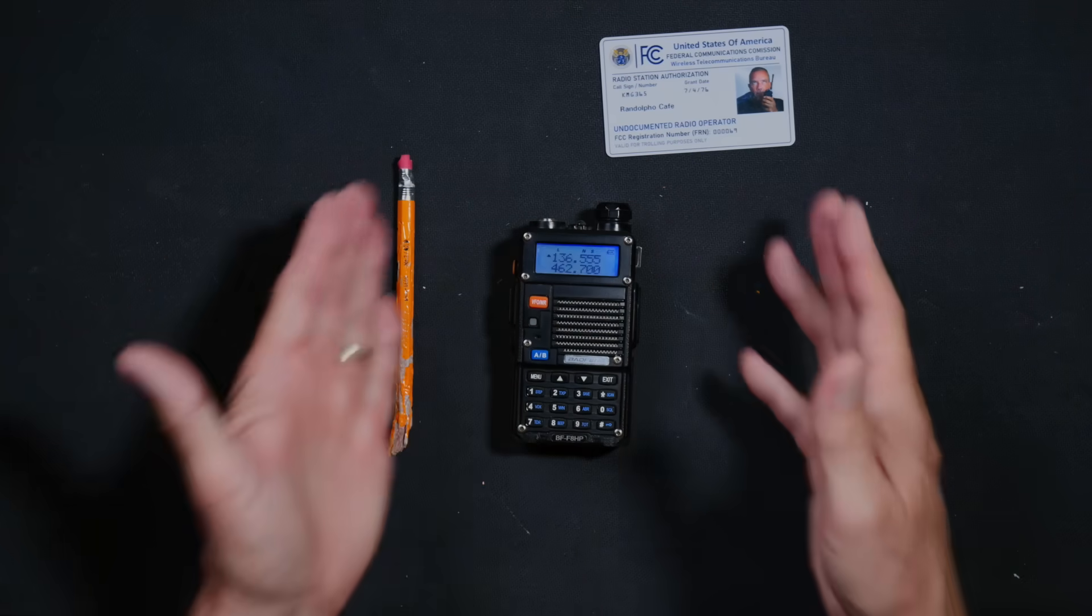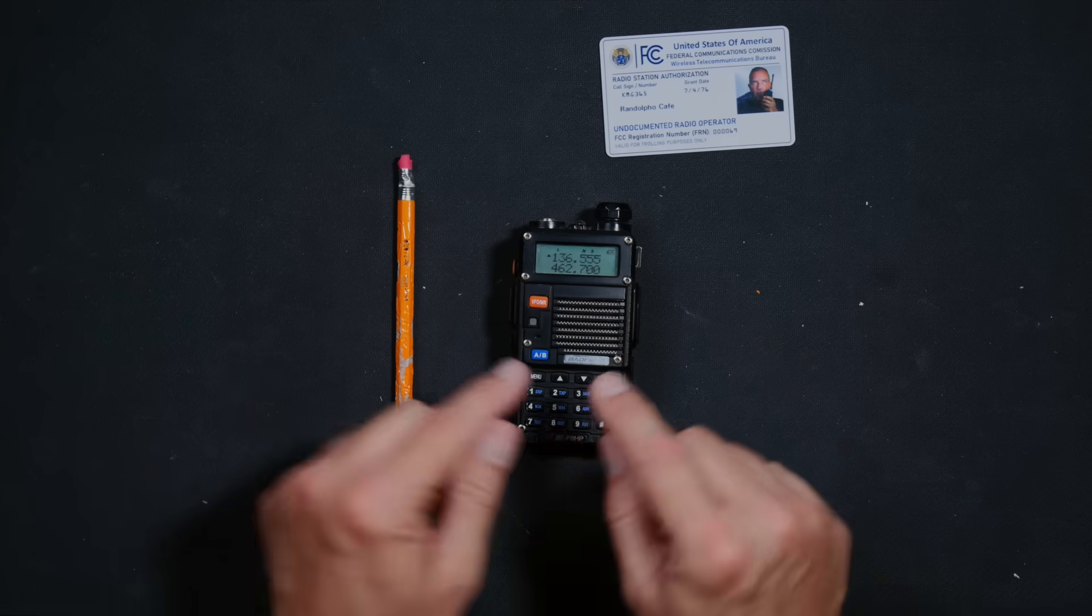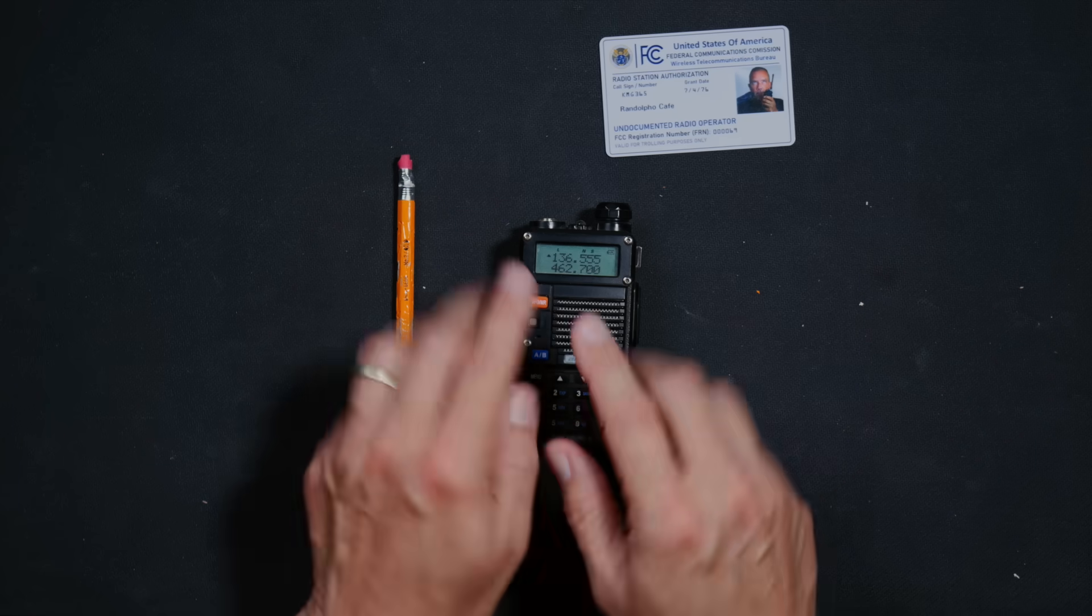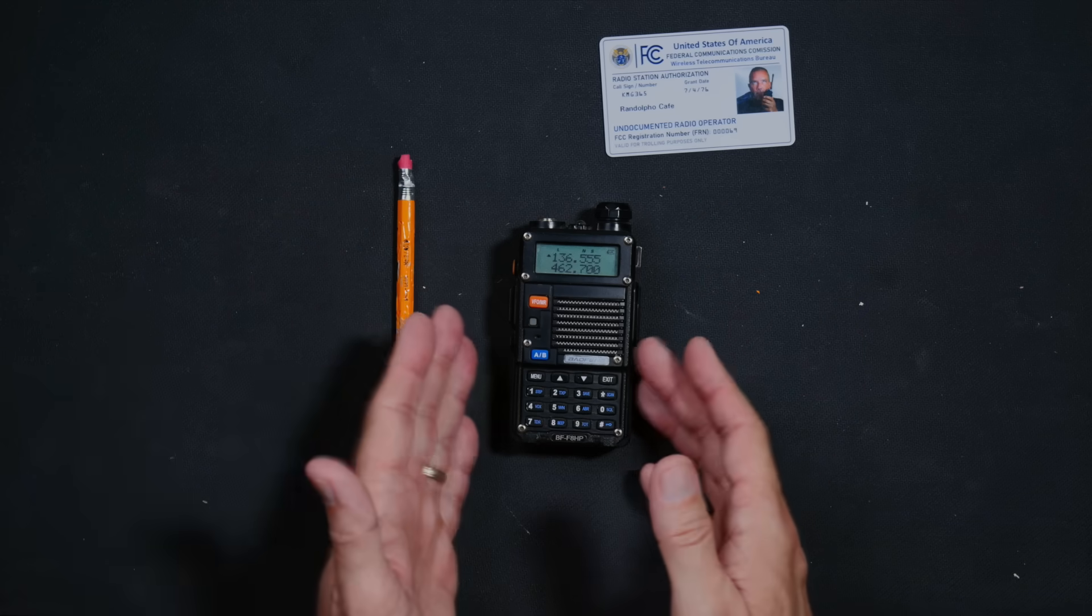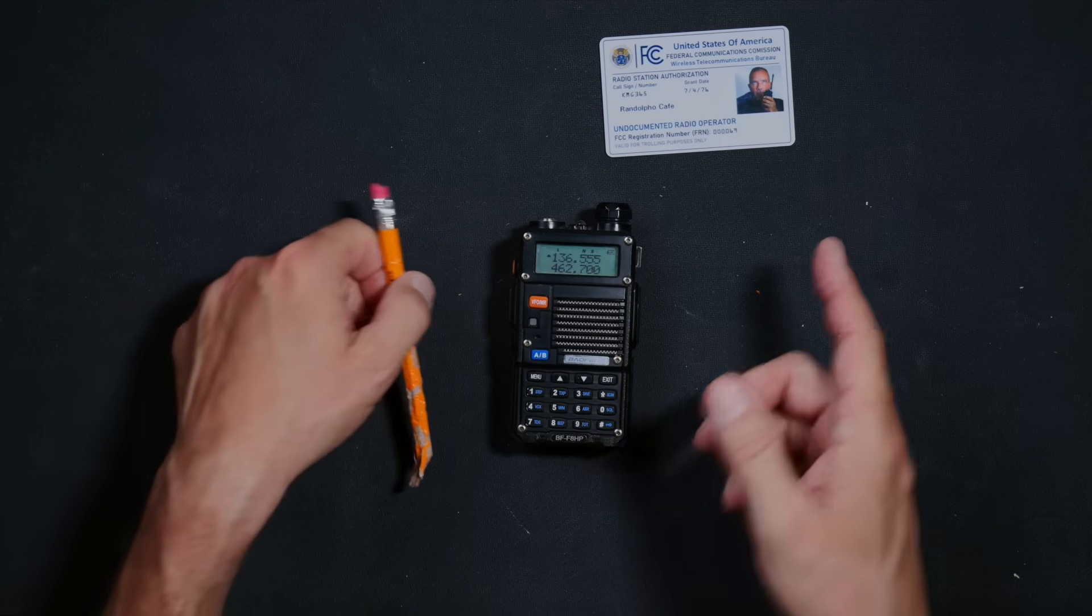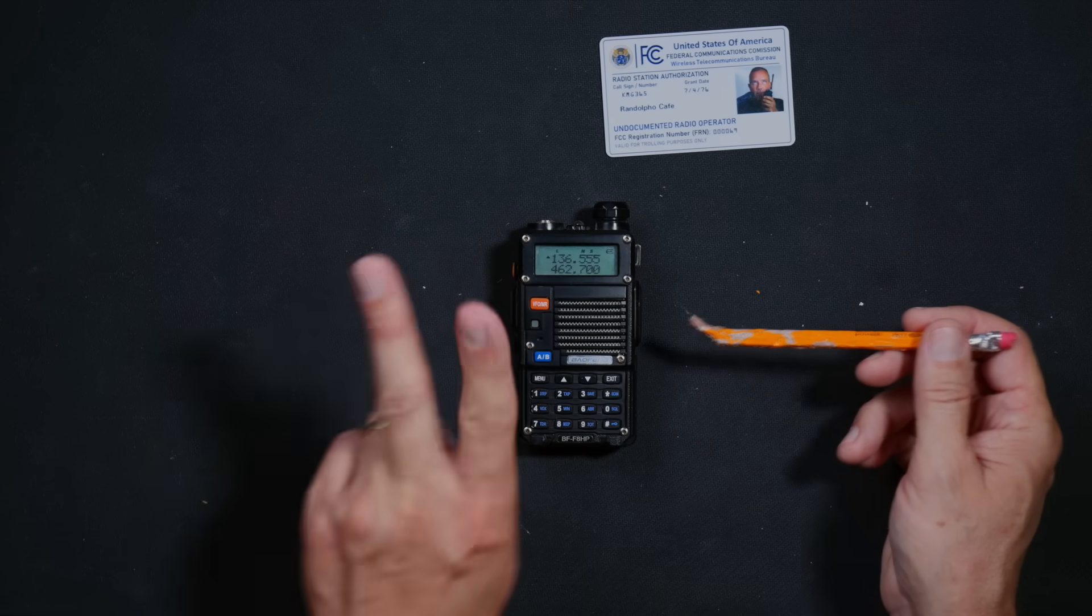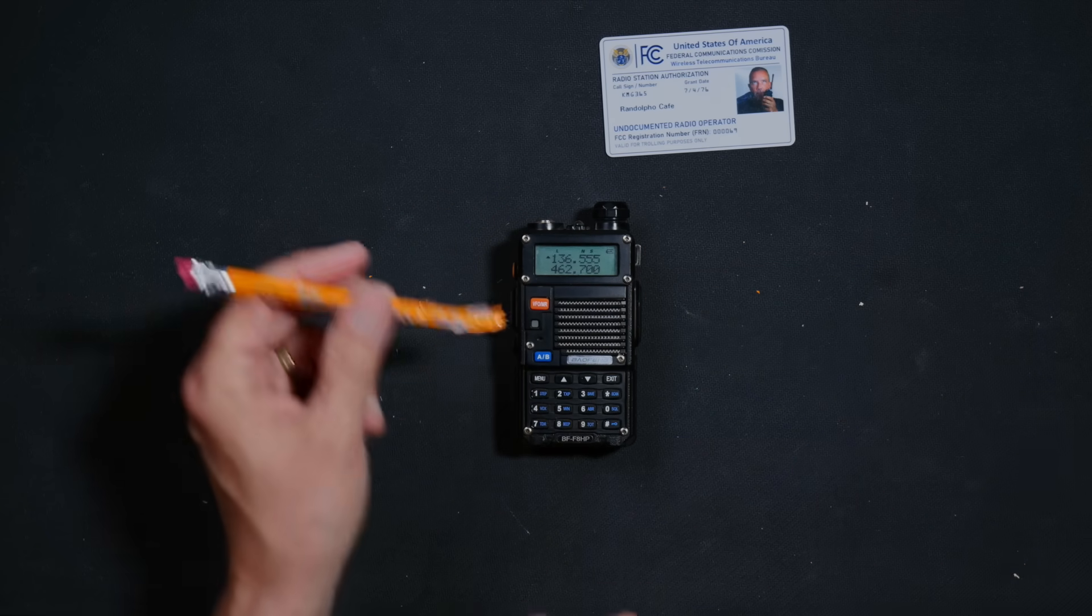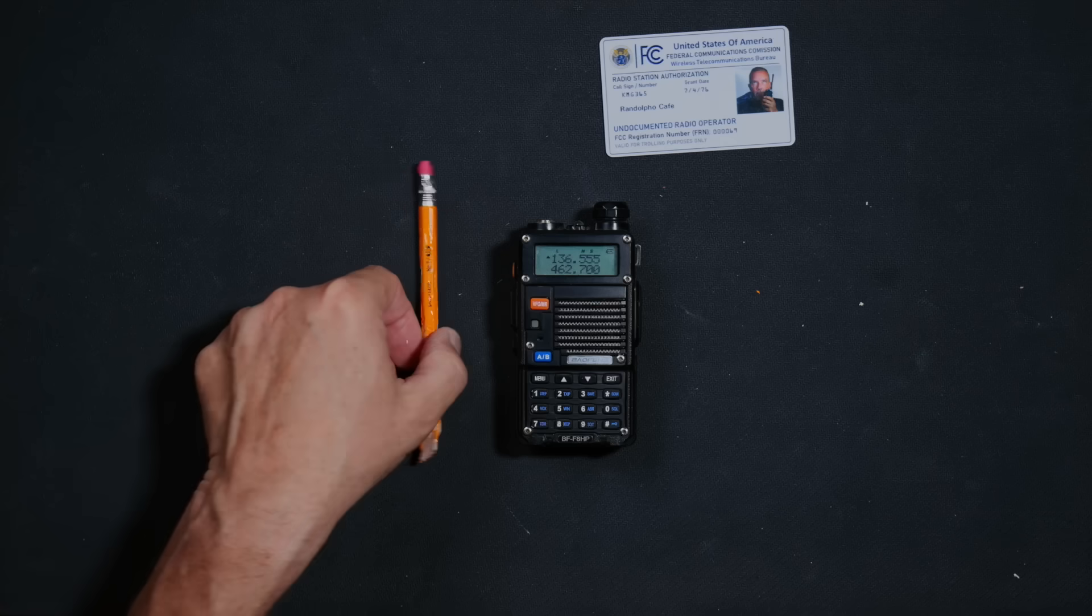Once you have successfully put the radio into VFO mode, now all you have to do is type in the frequency, the very frequency that you wrote down earlier. However, you must first decide which line you want to use. As you may have noticed, the Baofeng UV-5R and most similar radios have two lines on the screen and each line may display a different frequency.